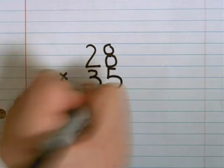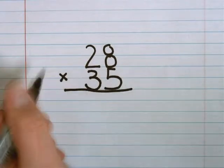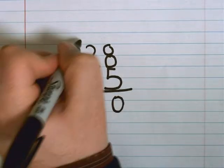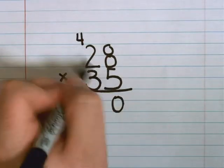I start that process by starting with the ones place. I'll multiply 5 and 8, which gives me 40. Record the 0 and carry the 4.